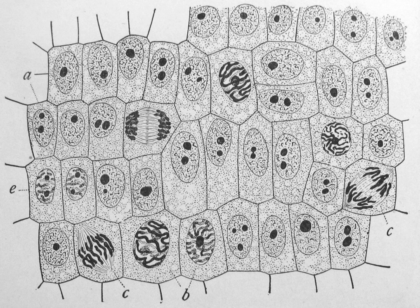Unicellular organisms can move in order to find food or escape predators. Common mechanisms of motion include flagella and cilia. In multicellular organisms, cells can move during processes such as wound healing, the immune response and cancer metastasis. For example, in wound healing in animals, white blood cells move to the wound site to kill the microorganisms that cause infection.